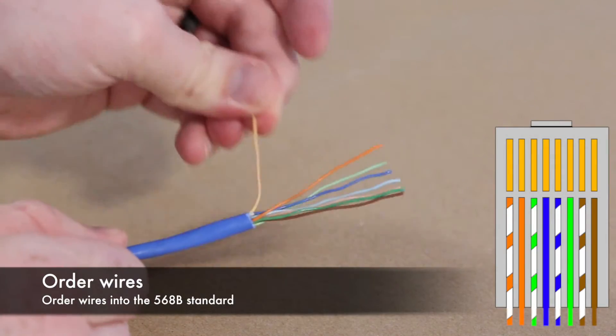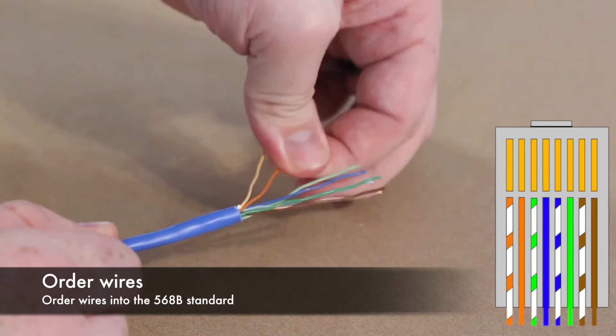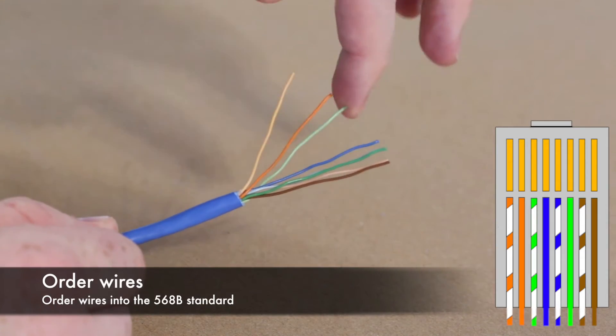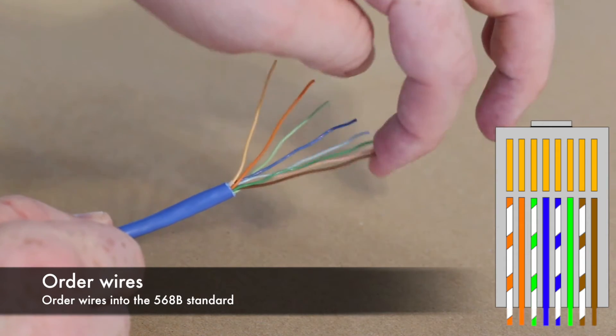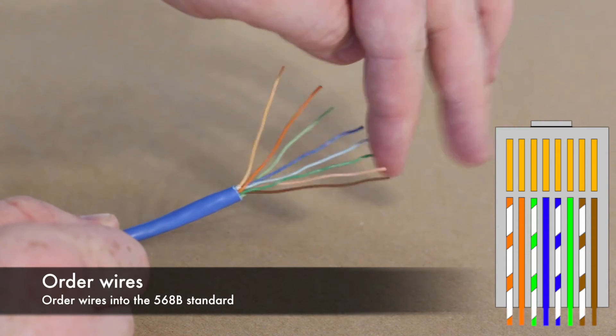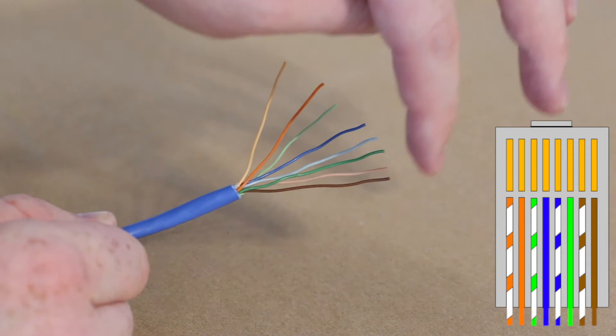So we're going to use the wires: orange white, orange, green white, blue, blue white, green, brown white, brown.